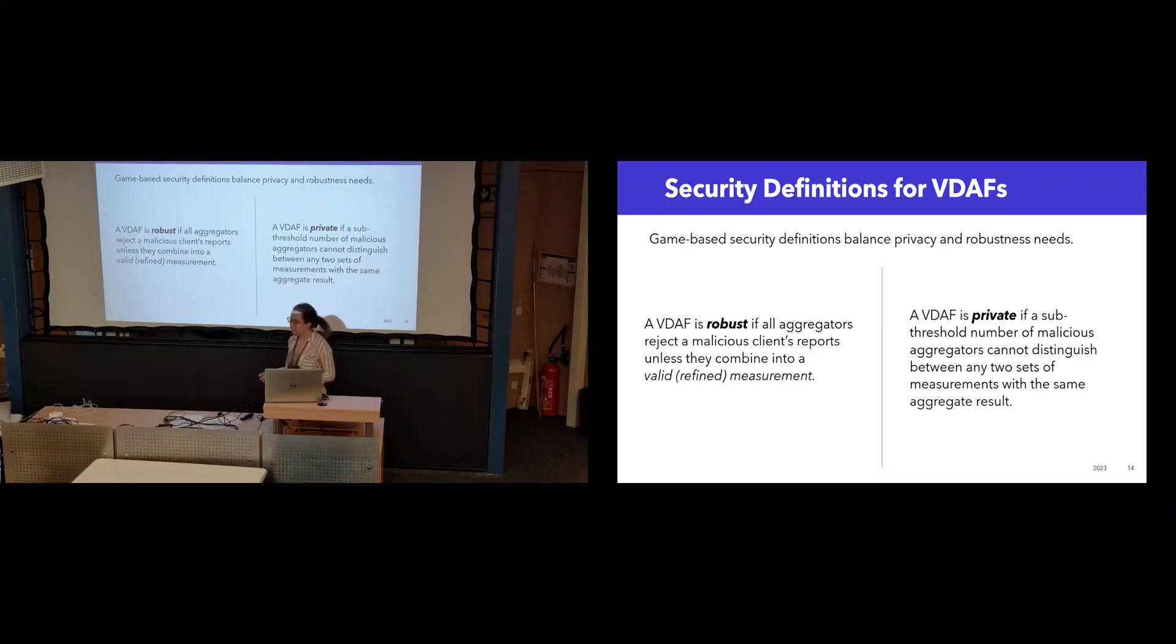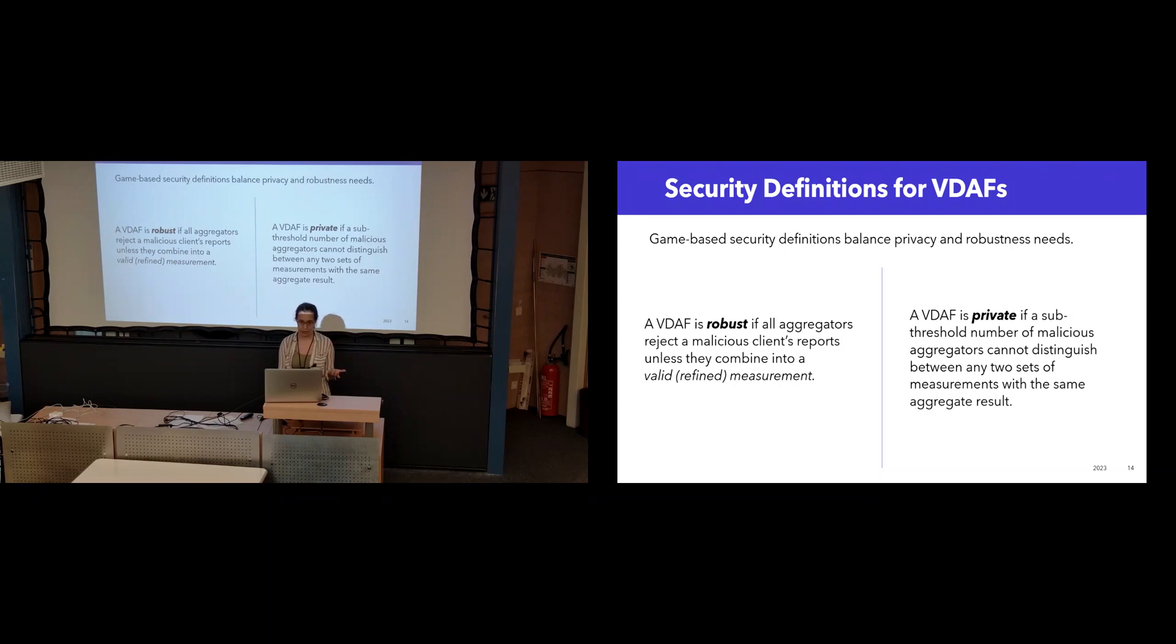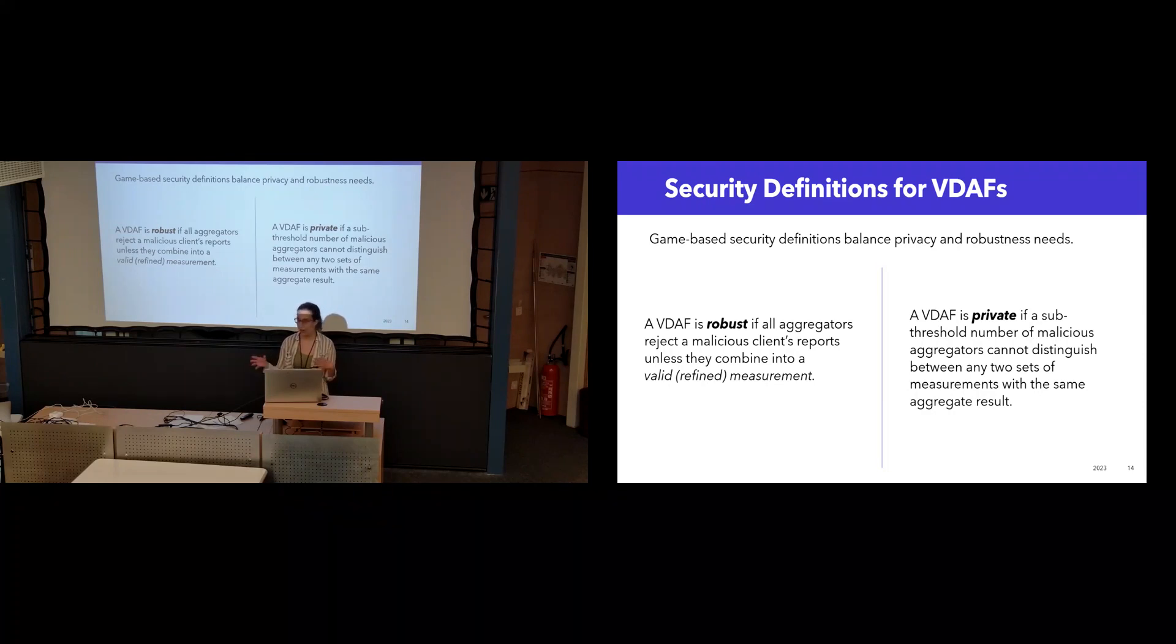So the first thing that we did is we gave two game-based security definitions for verifiable distributed aggregation functions, one to capture robustness and one to capture privacy. I won't go into many of the details, but I'll just say for robustness, we require all of the aggregators to be honest. For privacy, we allow both malicious clients and we allow some threshold number of malicious aggregators, which can be up to the scheme to decide what that threshold is.